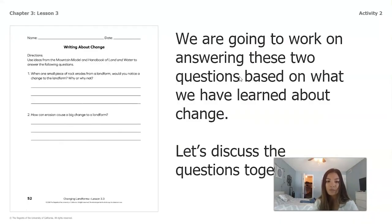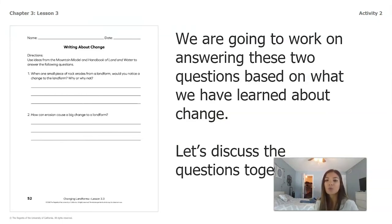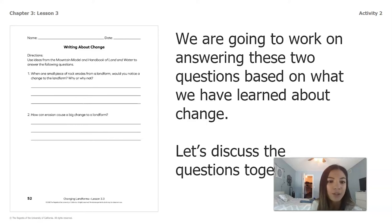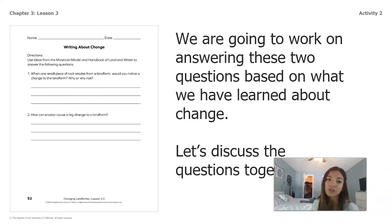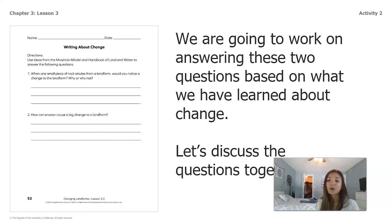Now we're going to move on to activity two, which is writing about change. In your packets you have two questions, and we're going to work on answering them based on what we've learned about change. Question one: when one small piece of rock erodes from a landform, would you notice a change to the landform? Why or why not? Question two: how can erosion cause a big change to a landform? Pause the video and answer these two questions in your packet, or talk to somebody at home, or think about how you would answer.